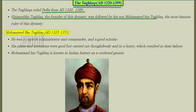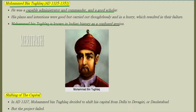Ghiyasuddin was followed by his son Muhammad bin Tughlaq, the most famous ruler of the Tughlaq dynasty, who ruled from AD 1325 to AD 1351. He was a capable administrator, commander, and good scholar. His plans and intentions were good, but he carried them out thoughtlessly and in a hurry, which resulted in their failure.